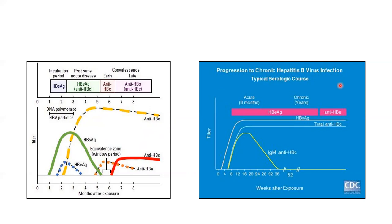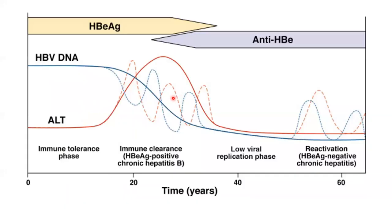In chronic hepatitis B, if surface antigen persists for more than six months, the antibody against core antigen is also persistent, but IgM anti-HBc is low — this is the marker of chronicity. The four phases are: immunotolerant phase, immune clearance phase, low replication phase, and reactivation phase.